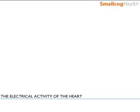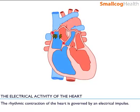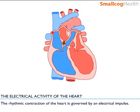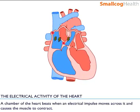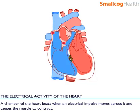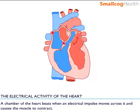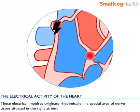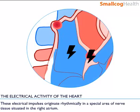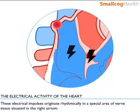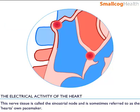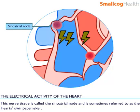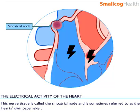The Electrical Activity of the Heart. The rhythmic contraction of the heart is governed by an electrical impulse. A chamber of the heart beats when an electrical impulse moves across it, causing the muscle to contract. These electrical impulses originate rhythmically in a special area of nerve tissue situated in the right atrium, called the sinoatrial node, sometimes referred to as the heart's own pacemaker.